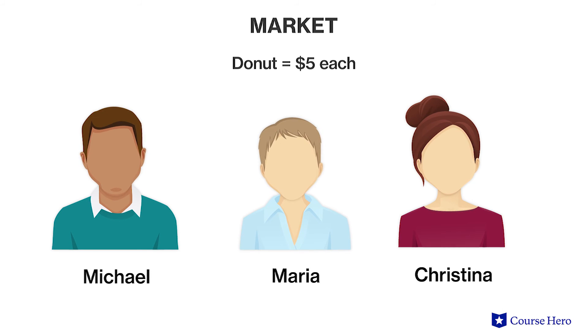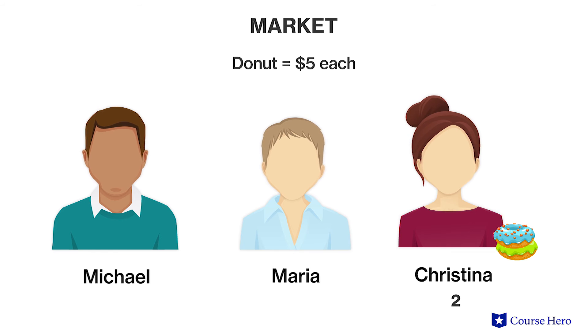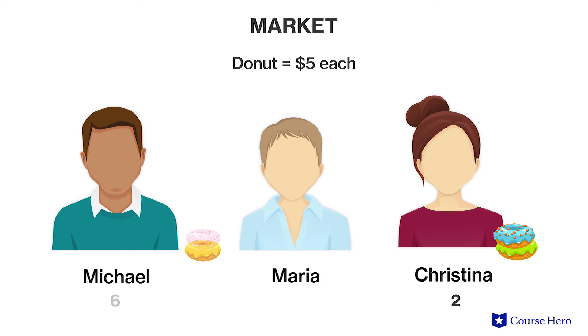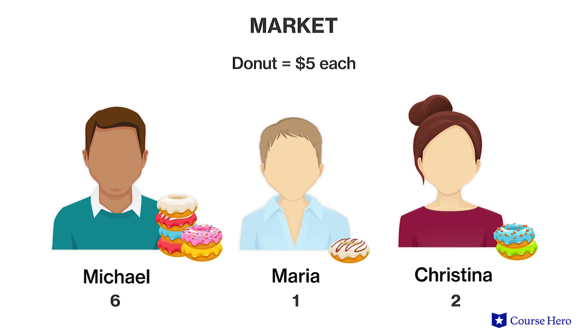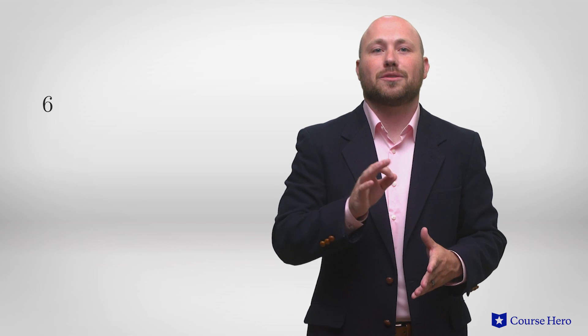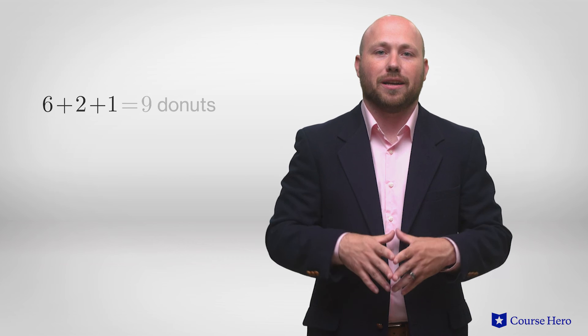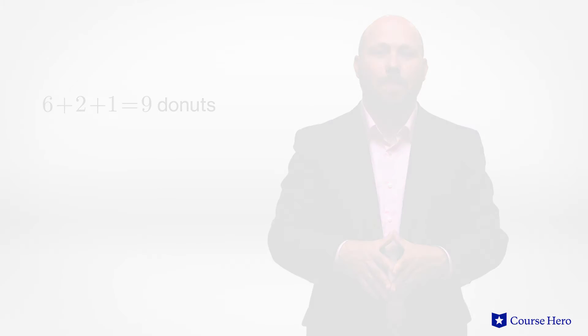But what if prices were $5 per donut? Christina would only buy two donuts, Michael will buy six, and Maria only one. Therefore the quantity demanded at five dollars is nine donuts. Six plus two plus one is how we get nine donuts.